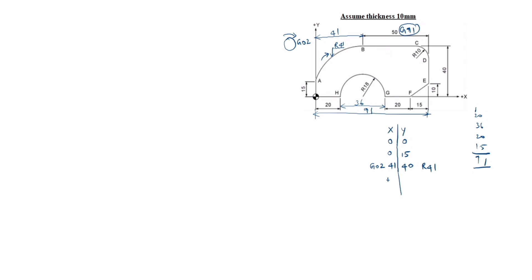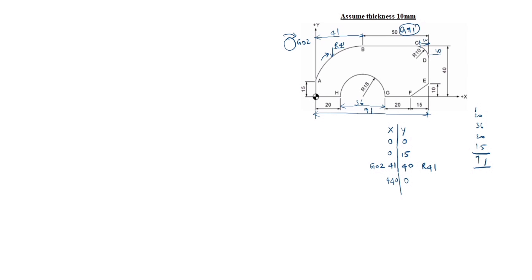Next, B to C: X-axis is plus 40, Y-axis is 0. Next, C to D: this comes down, this value is 10, so minus 10 for Y-axis. X-axis is 10. So you can write X10, Y minus 10. This comes clockwise. Clockwise is G02. Up to here finished.